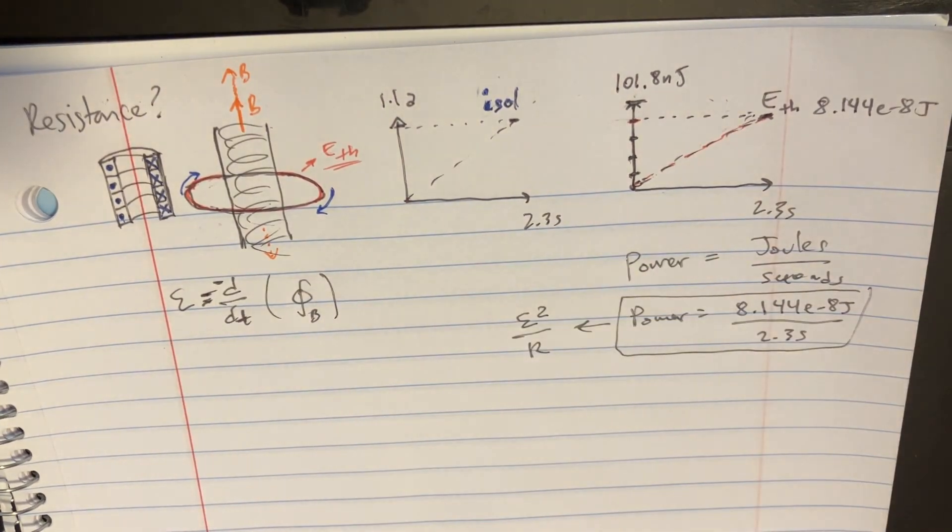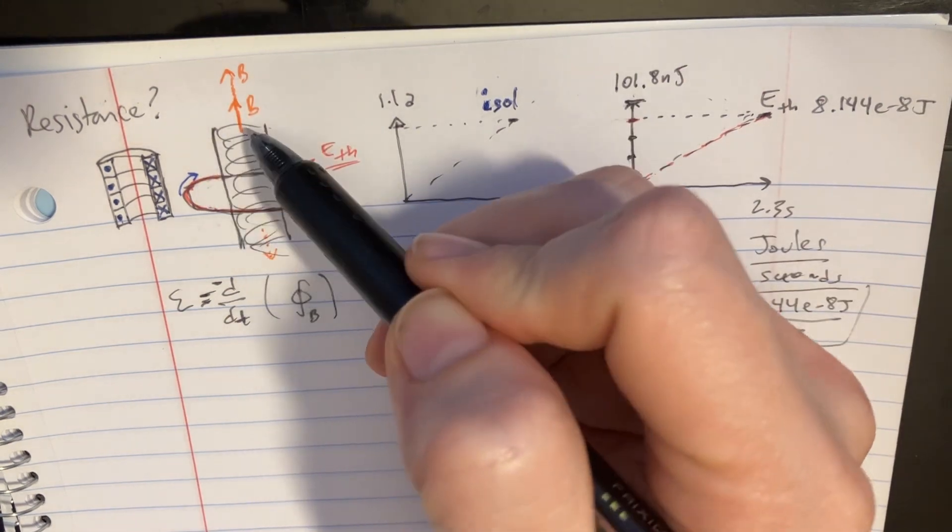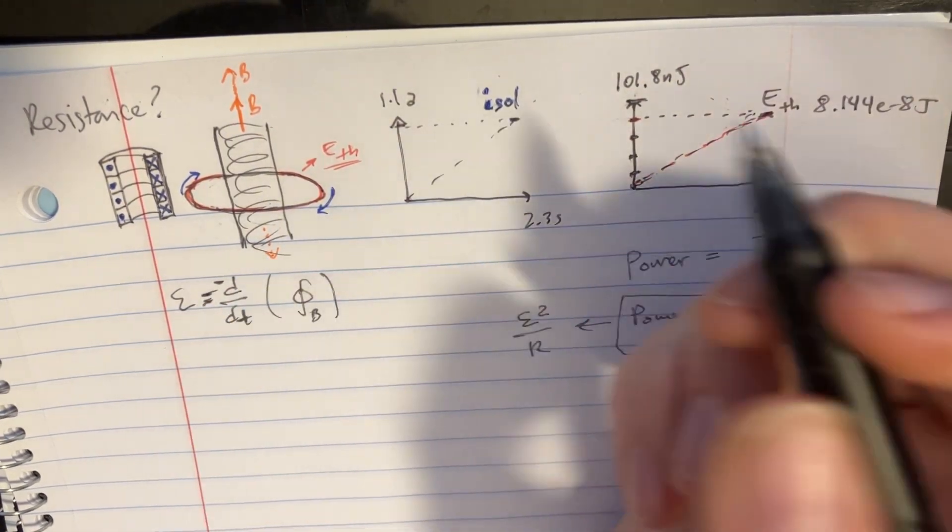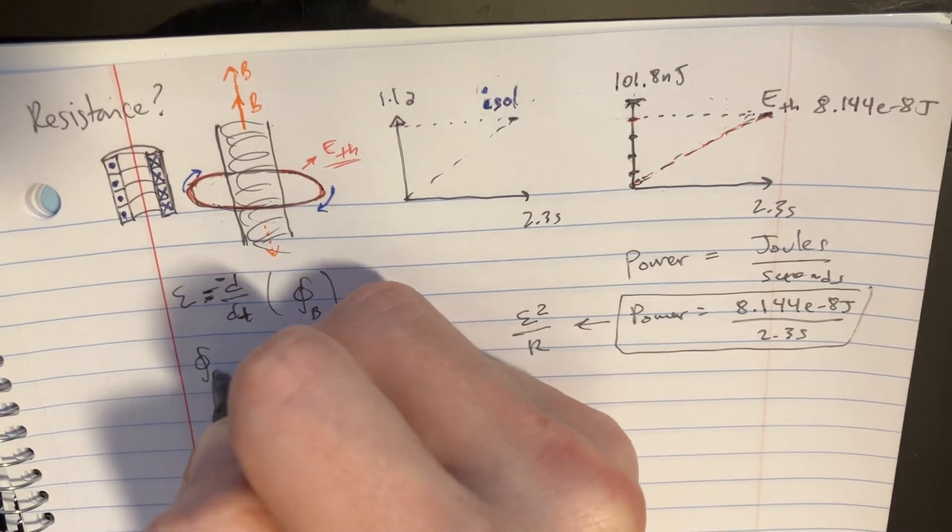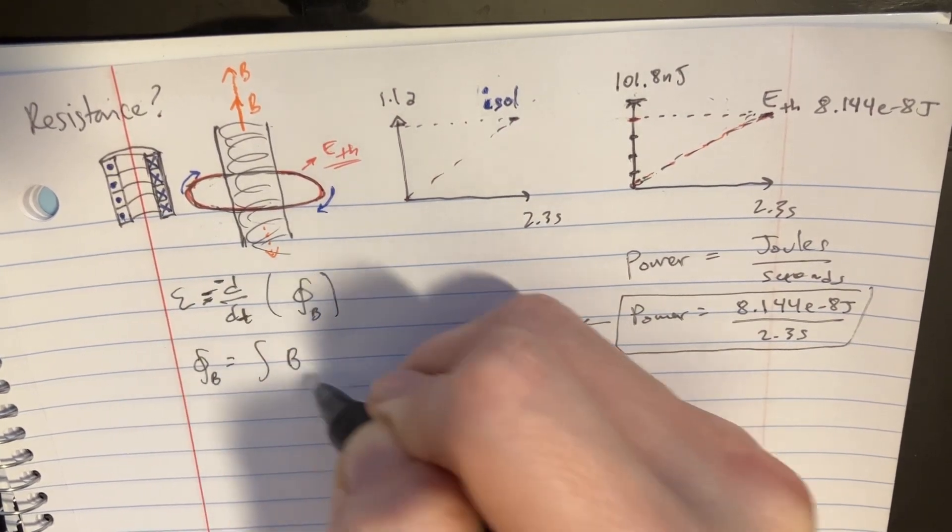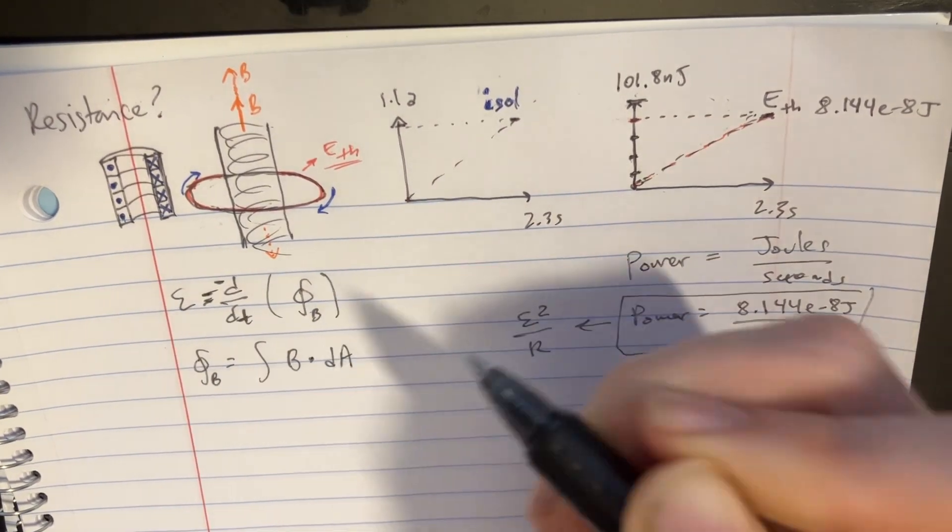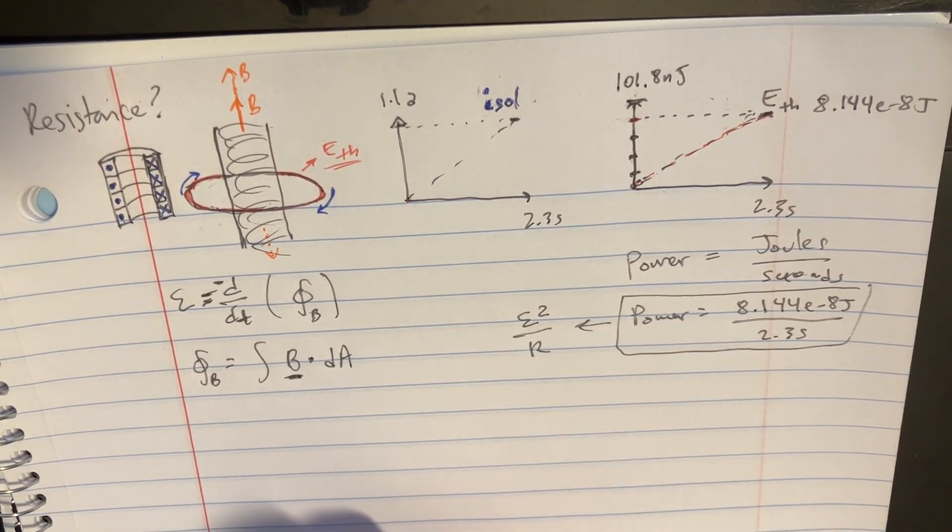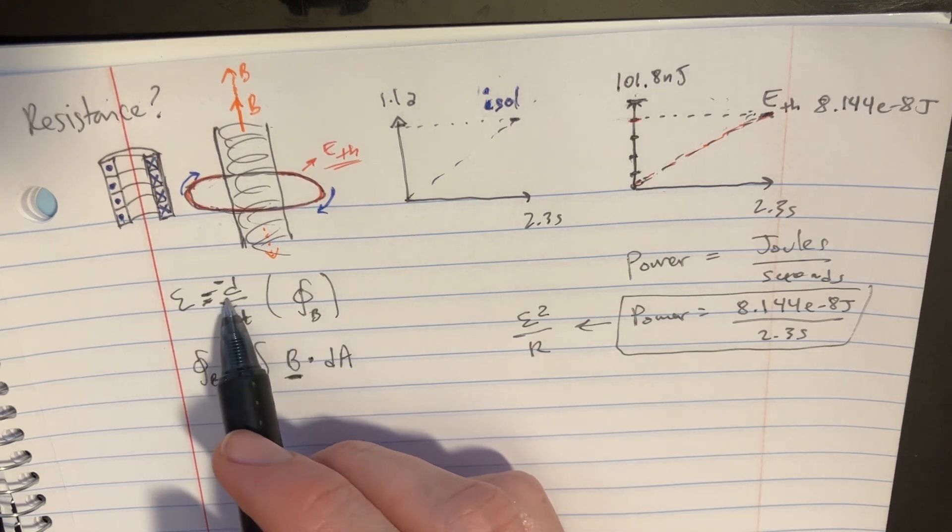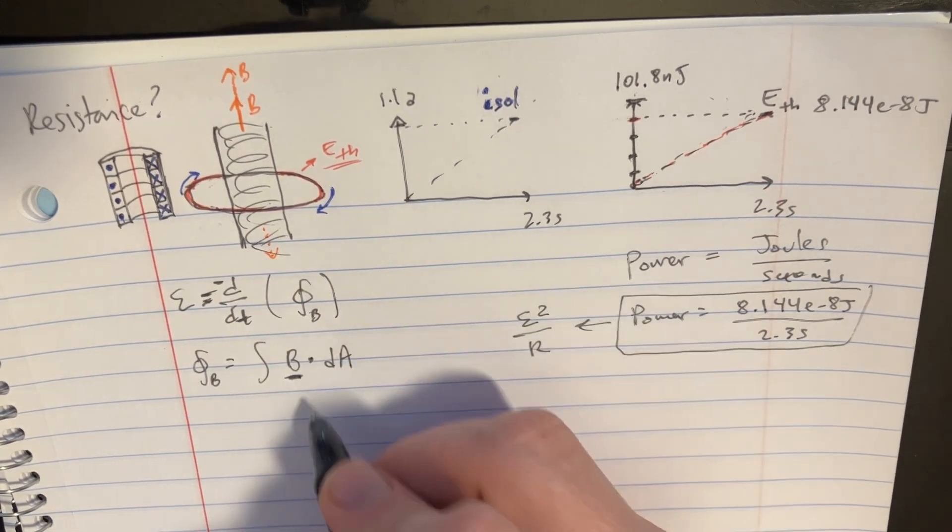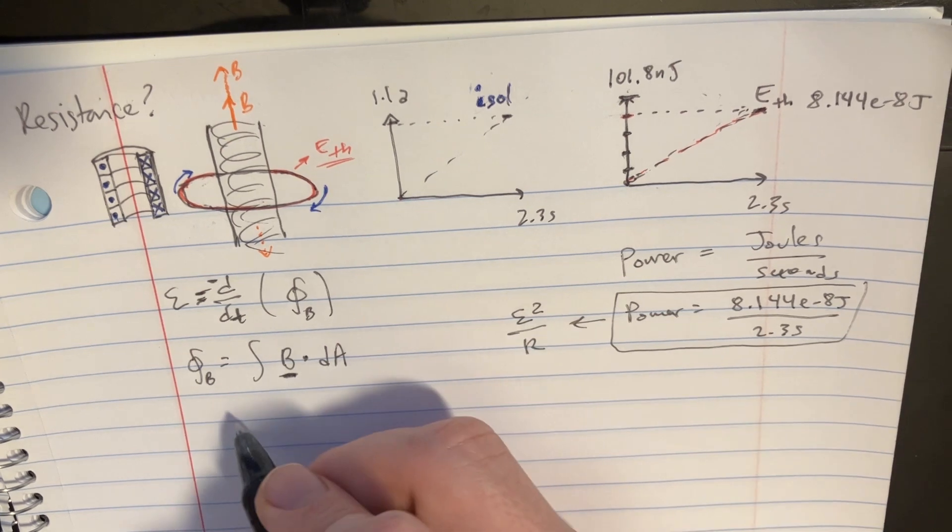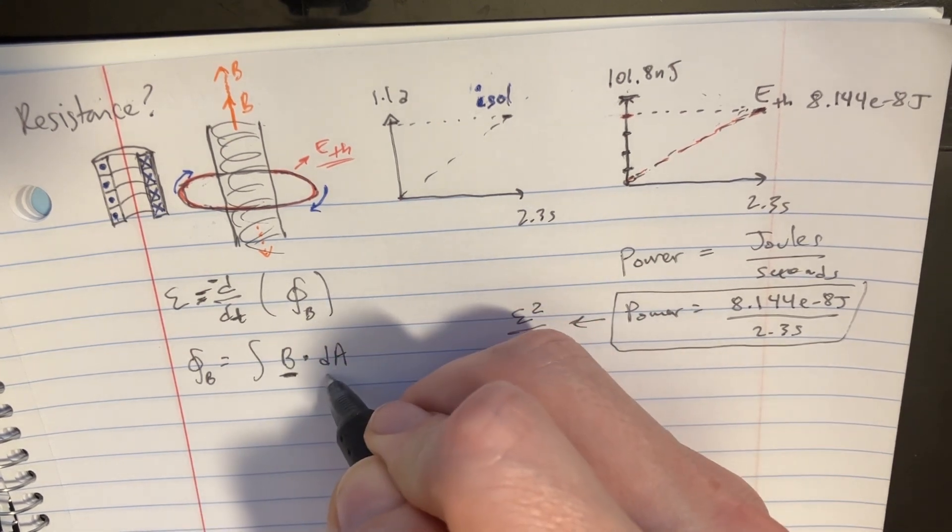Now we should be able to figure out what this EMF thing is, because that is supposed to be the time derivative of flux - and that's negative of course, but we don't really care too much about that usually. But we'll just go ahead and put that in there. Let's figure out what that flux is. So flux is supposed to be the integral of B dotted with dA.